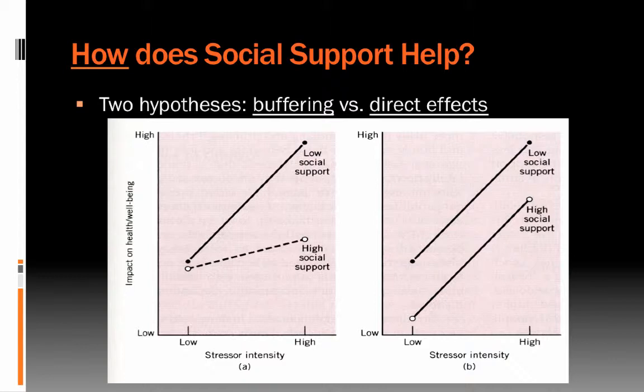Another hypothesis is what's called the direct effects hypothesis. It simply says more social support is better all the time — whether you are experiencing low stress or high stress, you are better off having strong social support. The truth is probably somewhere in the middle. High social support probably is better all the time, but it probably has a bigger impact under periods of high stress. So the truth is likely somewhere between these two hypotheses.